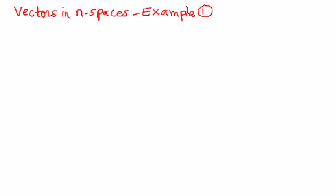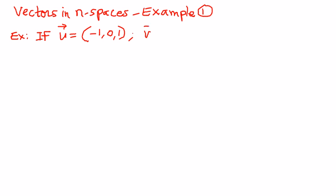Let's say we have an example of this type. If u is a vector with components negative 1, 0, 1, and v is another vector with components 2, negative 1, 5, in R3 space.